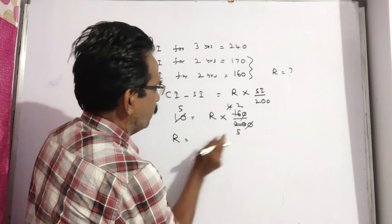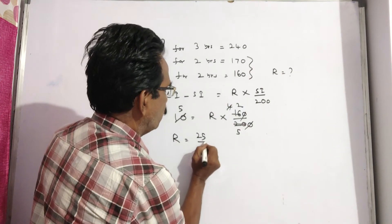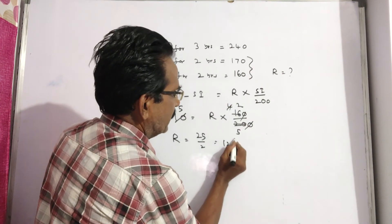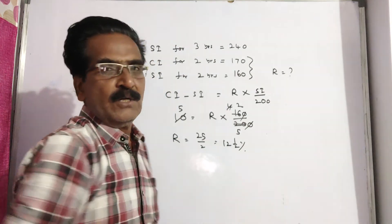R is equal to 5, 25 by 2. 25 by 2 means 12 and a half percent, friends. R is equal to 12 and a half percent.